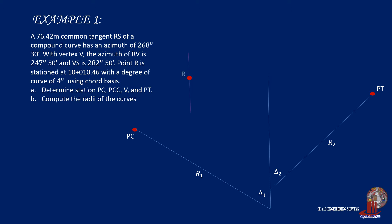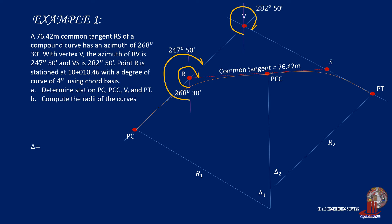At point R, an azimuth of 268 degrees 30 minutes would be drawn to identify the common tangent RS. And from the same point R, an azimuth of 247 degrees 50 minutes to locate vertex V. And so, from this point, take an azimuth of 282 degrees 50 minutes to draw the forward tangent to PT. Angle delta can then be computed as the difference of 282 degrees 50 minutes and 247 degrees 50 minutes, which gives 35 degrees.